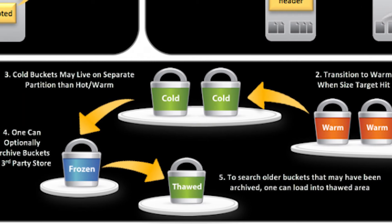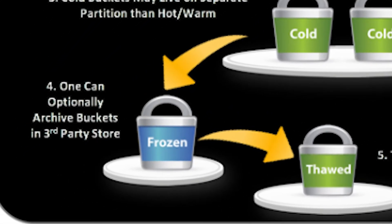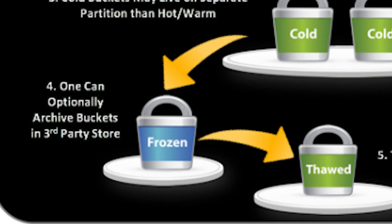When a cold bucket either ages out or some other criteria is reached, it's rolled to a frozen bucket. By default, when this occurs, Splunk just deletes the data. This could be a real issue if you have business requirements like compliance that require you to hold on to logs for a specific period of time. You can tell Splunk to not delete cold buckets and instead archive them by configuring the indexes.conf file to do exactly that. If you instruct Splunk to retain cold buckets after aging out instead of deleting them, they are turned into archived data, or frozen buckets.